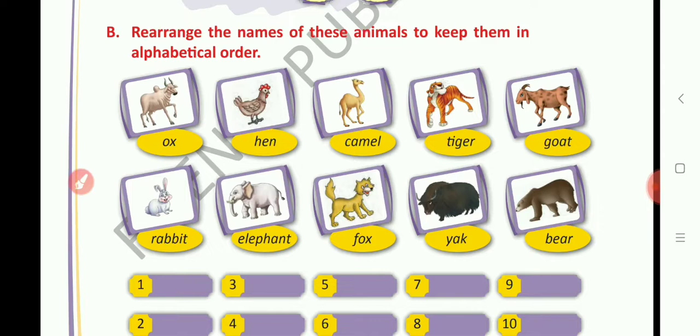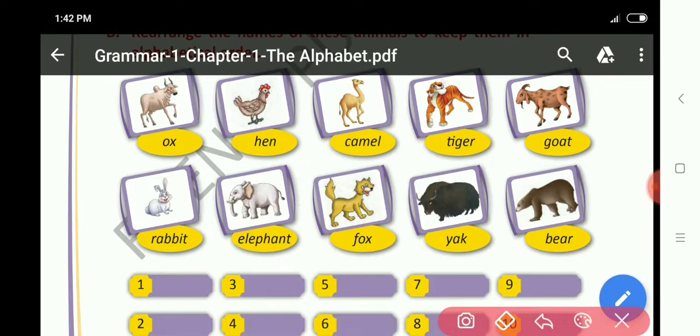So, children, tell me which word start with the B. Which animal name I have to write down in here. First column. Tell me. Yes. Write down. B, E, A, R. Bear. Bear. Write down. Number one: B, E, A, R. Bear.